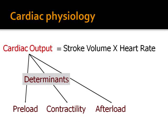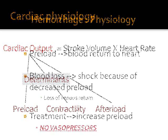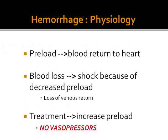Before we embark on a discussion of shock, it's important to review cardiac physiology. Cardiac output is stroke volume times heart rate. The determinants of cardiac output are the preload — that is the end diastolic volume — the contractility, that is the power of contraction of the heart, and the afterload, which is peripheral resistance. In hemorrhage, the cause of shock is loss of blood volume, which can be either internal or external, and that leads to loss of preload.